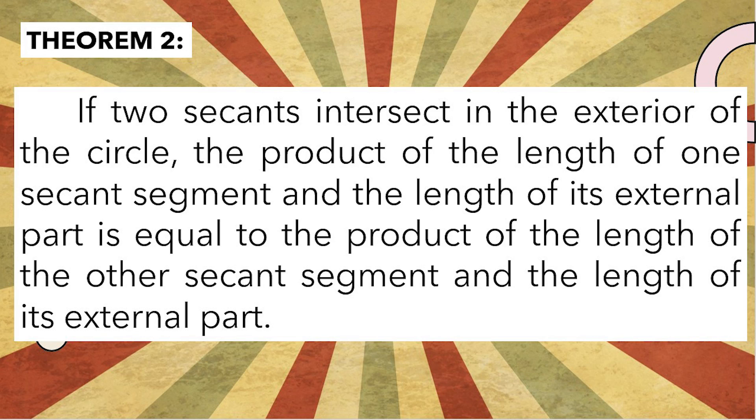Next, we call this the segments of secants power theorem. It states that if two secants intersect in the exterior of the circle, the product of the length of one secant segment and the length of its external part is equal to the product of the length of the other secant segment and the length of its external part.